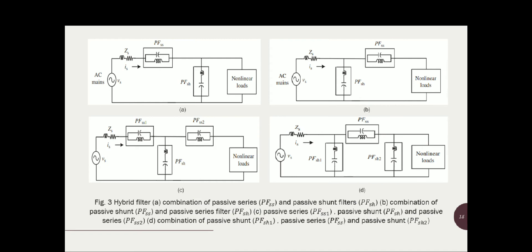Various combinations of hybrid filters are shown. Figure (a) shows the combination of a passive series filter and a passive shunt filter. Figure (b) shows the AC main directly connected with a passive shunt followed by a passive series filter to the nonlinear load. Figure (c) shows a passive series filter, then a passive shunt filter, then again a passive series filter. Figure (d) shows a passive shunt filter, then a passive series filter, then a passive shunt filter. These are the various arrangements of hybrid filters.